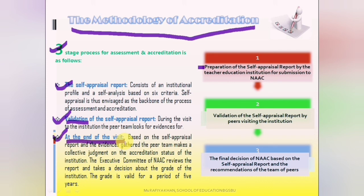So the grade given by NAAC is valid for five years. After five years, the institution can apply again for reaccreditation. For example, if your grade is not good, you realize there is scope for improvement. You improve your institution and then apply again for a better NAAC grade. Otherwise, after every five years, you must apply for accreditation and grading by NAAC.